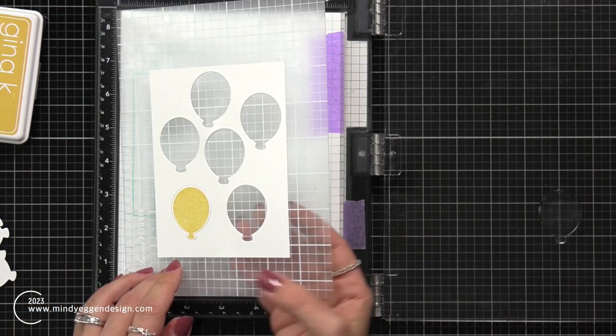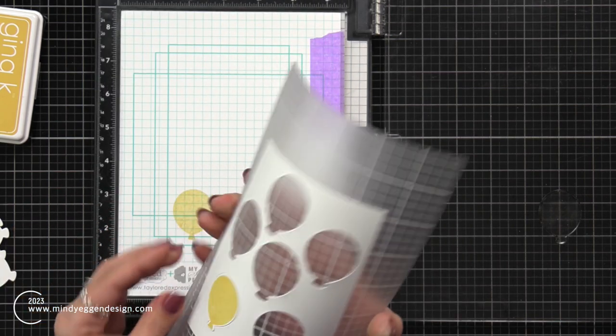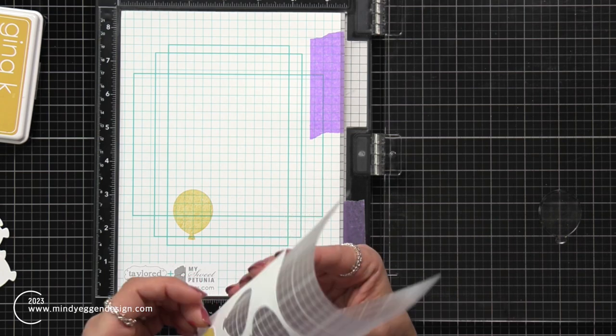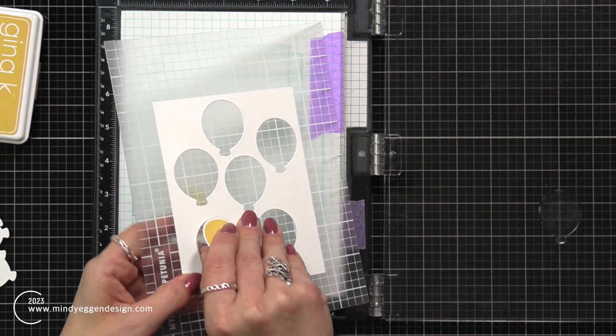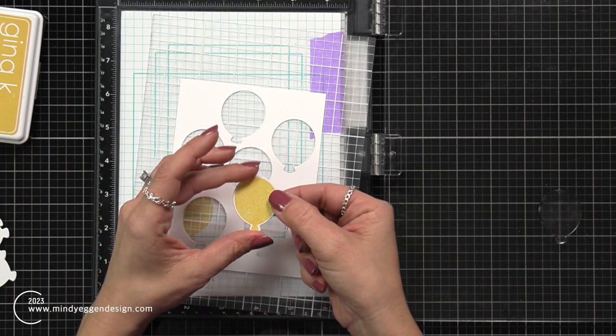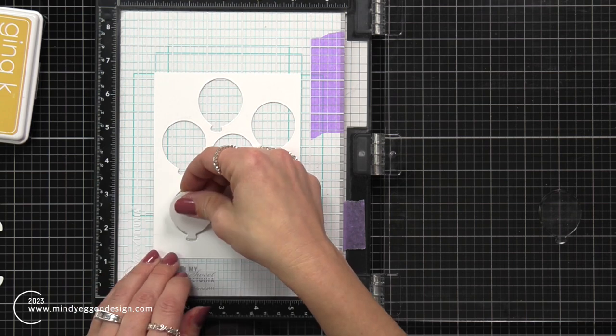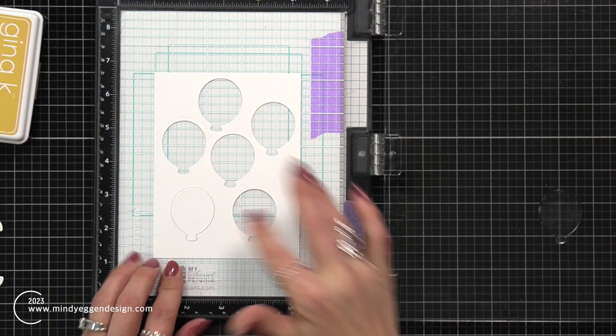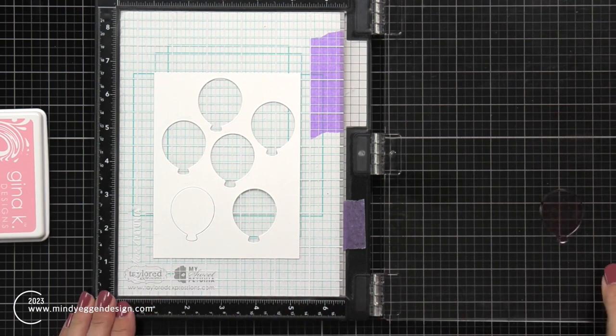Then I had just inked that up with a light yellow ink which I believe is Lemon Drop from Gina K Designs and stamped that down. Now to remove this you just need to kind of fold or bend that sticky sheet and it'll pop out. It becomes easier the more I'm using it. Mine is pretty new so it's really sticky. So after I remove that balloon I can pop in another one in that same place and just go through a rainbow of colors.